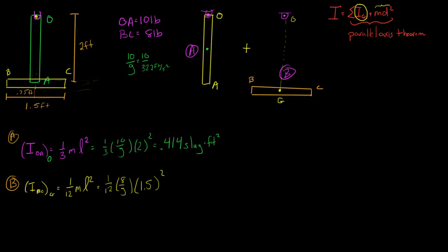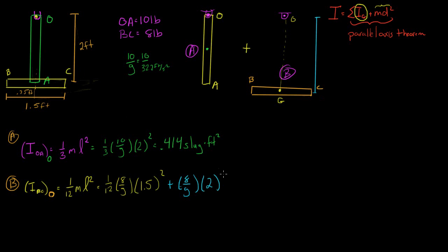We found the moment of inertia about point G, but we're interested in the moment of inertia about point O. Using the parallel axis theorem, the moment of inertia about point O equals the center-of-mass value plus md squared, where the mass is 8 over G and the distance from the center of BC to point O is 2 feet. So we add 8 over G times 2 squared. Calculating this entire equation gives 1.04 slug·ft².